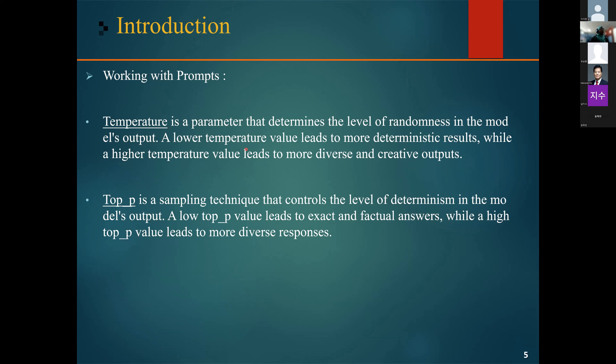A lower temperature leads to more deterministic results, while a higher temperature encourages more diverse or creative outputs. For example, if we want to use a lower temperature value for tasks like fact-based question answering, that encourages more factual and concise responses. For story generation or other creative tasks, we might need to increase the temperature value.